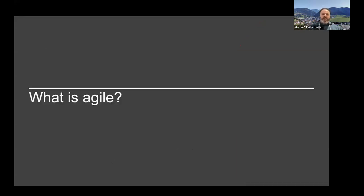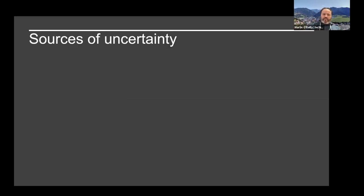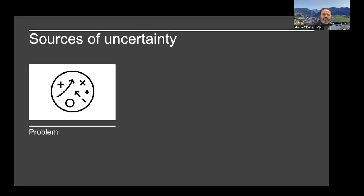What is agile? It's a set of working practices for software development, but these can also be applied more generally to project development or producing other types of work. Fundamentally, the problem agile is trying to solve is one of uncertainty. There are three main sources of uncertainty when it comes to software. The first and biggest is uncertainty around the problem — what is it that we're trying to tackle?